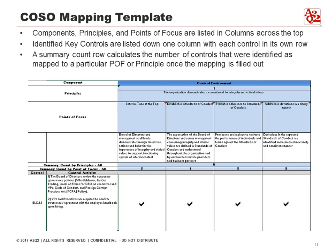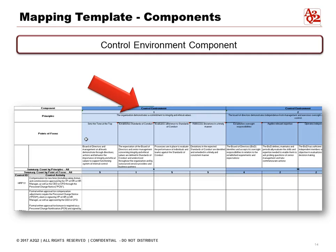Here's an example of the layout of our template. We first start out with components, so you can see on the left hand side there are components, there are principles, there are points of focus, and a summary count row that calculates the number of controls that were identified as it was mapped to a point of focus or to a principle. Once the mapping is filled out, you can see it's an Excel file that we've built. The control environment is shown in blue so we can visually break it up.